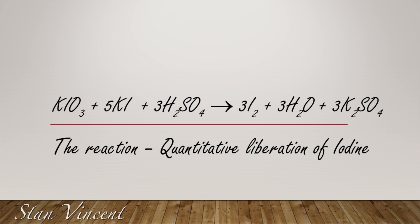This is the reaction we are going to use. Potassium iodate is a primary standard; it is allowed to react with potassium iodide in an acid medium to liberate iodine. This iodine is quantitatively liberated and depends on the molarity of KIO3, or potassium iodate. Since we know the exact quantity of iodine liberated, we can determine the molar concentration of sodium thiosulfate.